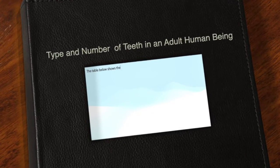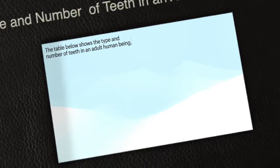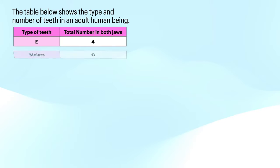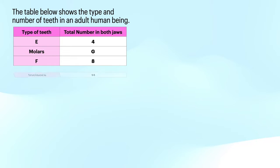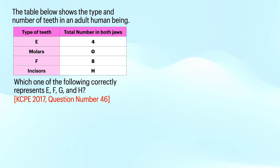The table below shows the type and number of teeth in an adult human being. The teeth labeled E are 4 in number in both jaws. The number of molars in both jaws is labeled G. The teeth labeled F are 8 in number in both jaws. The number of incisors in both jaws is labeled H. Which one of the following correctly represents E, F, G, and H?